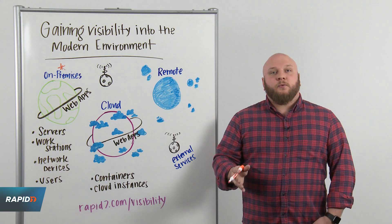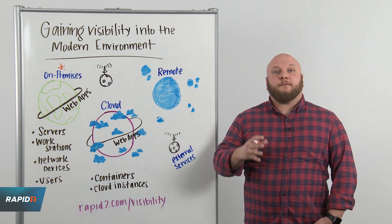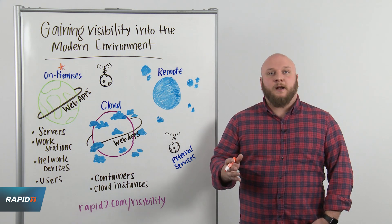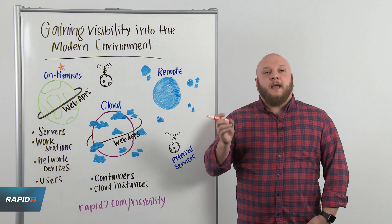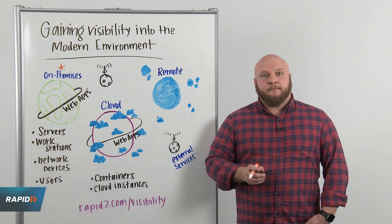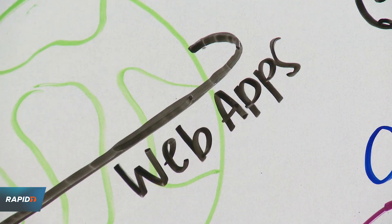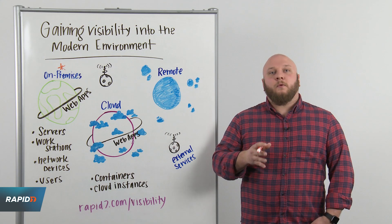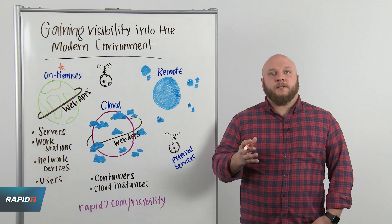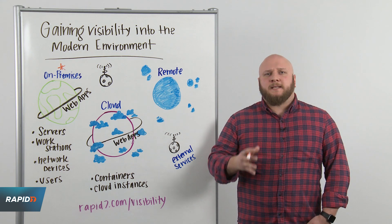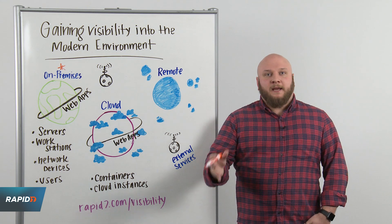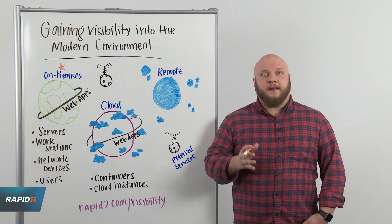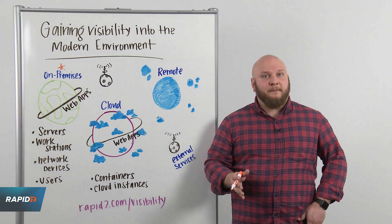For users, we're going to need to integrate with things like Active Directory so we can understand who our users are and what they're doing. In this on-premises data center, we're probably running some legacy web applications, so we're going to want to look for solutions that can assess basic standard PHP websites in order to identify any risk that they may be producing.